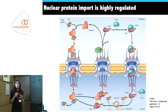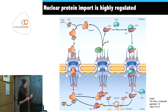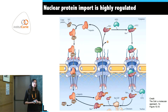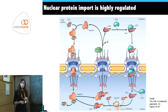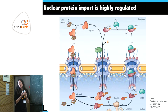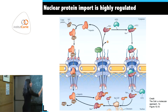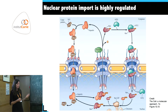Just remember: if proteins need to be actively transported into the nucleus, they need a nuclear localization sequence. Conversely, to be actively exported from the nucleus, they need a NES — a nuclear export sequence — that triggers the reverse process via the nuclear export factor CRM1.